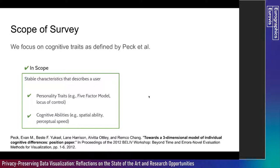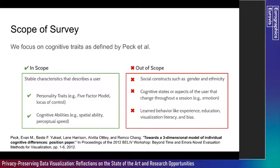The scope of this survey focuses on personality traits — for example, the five-factor model or locus of control — and cognitive abilities — such as spatial ability or perceptual speed. We do not include social constructs such as gender and ethnicity, cognitive states, or aspects of the user that can change throughout the session, such as emotion. We also do not include unstable traits or learned behaviors such as experience, education, literacy, and bias.